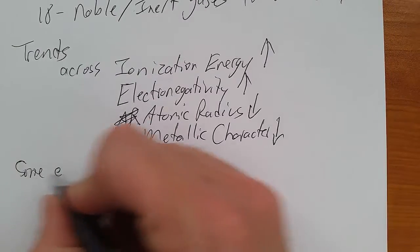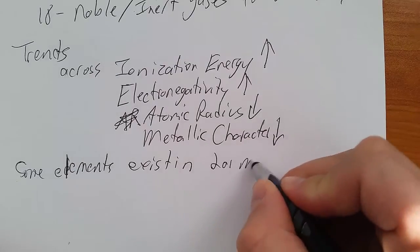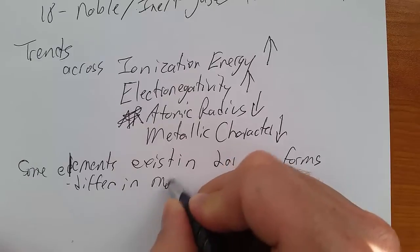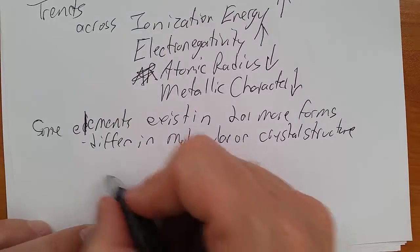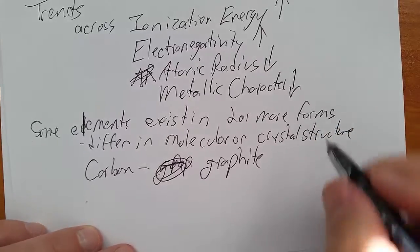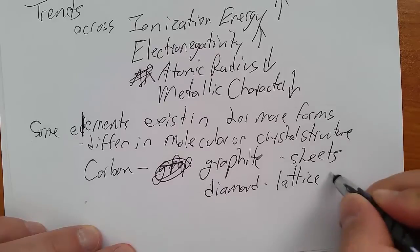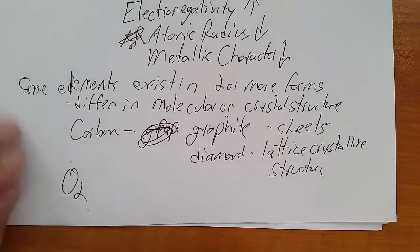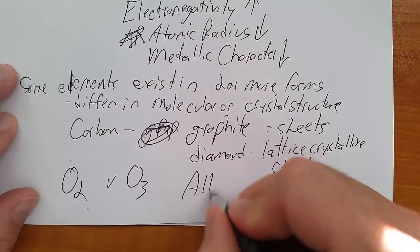Finally, some elements exist in two or more forms in the same phase. Alright. They differ in molecular or crystal structure. A couple of examples. Carbon can exist as graphite. Graphite, which is kind of in sheets. Or it can exist as diamond. Or it can exist as diamond, which is a lattice crystalline structure. Another example is oxygen O2 versus ozone, O3. And these are referred to as allotropes.